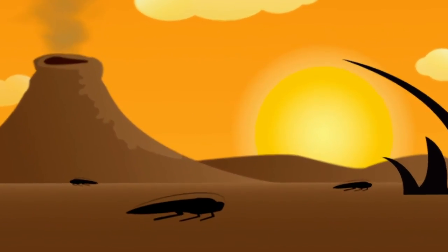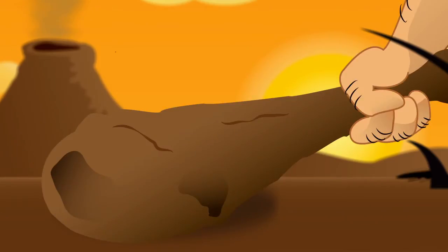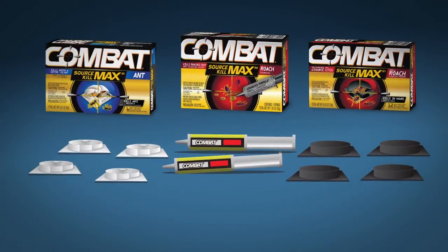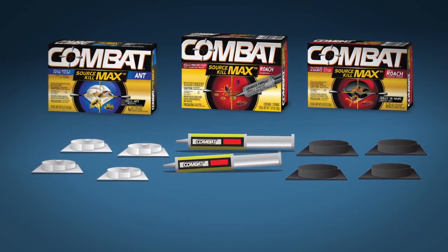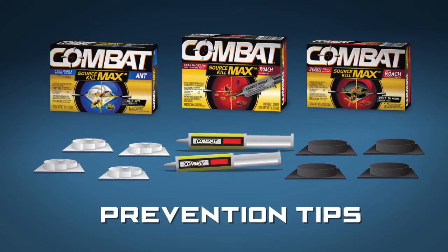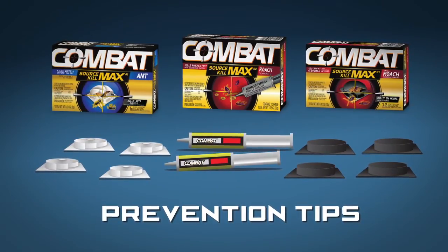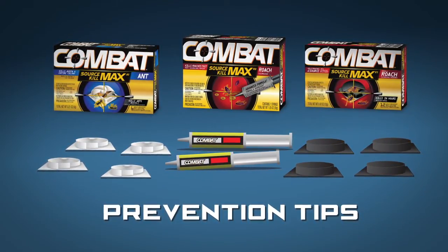Ants and roaches have been around for millions of years. They're tenacious. They know how to survive. But with Combat baits and gels and a few strategic tips, you can finally get long-term control that stops ants and roaches from propagating at their source.